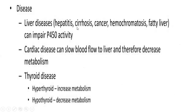Liver diseases like hepatitis, cirrhosis, cancer, hemochromatosis, and fatty liver can all impair the activity of cytochrome P450. Cardiac diseases can slow blood flow to the liver, thereby decreasing metabolism. Thyroid diseases also affect metabolism: in hyperthyroidism, elevated thyroid hormone levels increase the metabolic rate, whereas in hypothyroidism, lower thyroid hormone levels decrease drug metabolism.